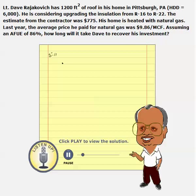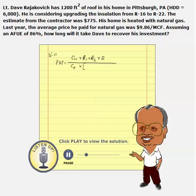This is a typical problem that uses an equation for payback period equal to Ci — cost of insulation — times R1 times R2 times efficiency, divided by cost of energy times R2 minus R1, which is the final R value minus initial R value, times HDD times 24.